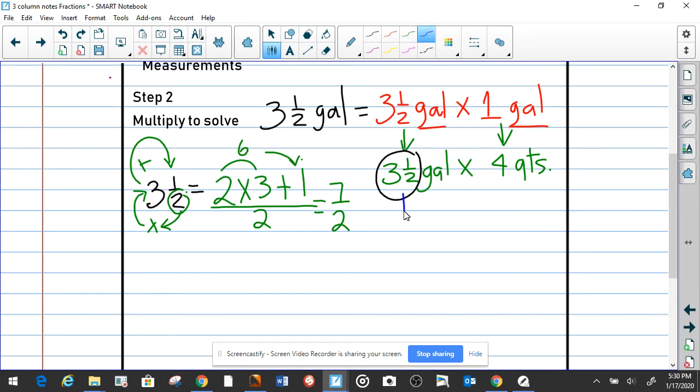Now we can replace three and one-half gallons into seven-half gallons times four quarts.